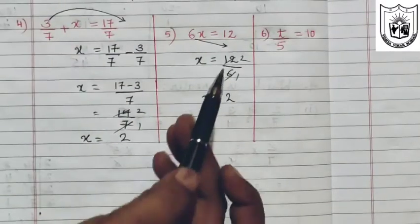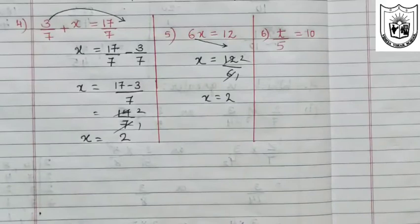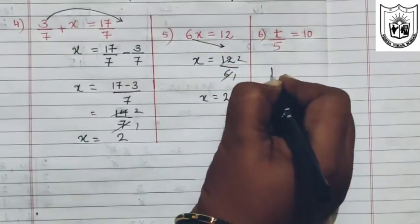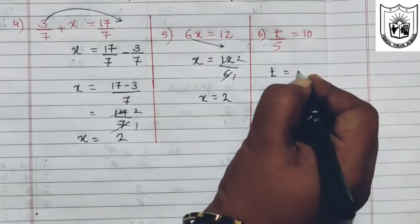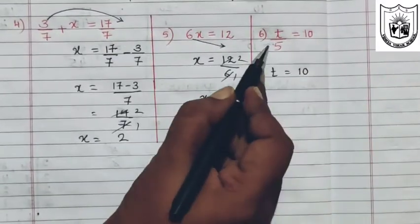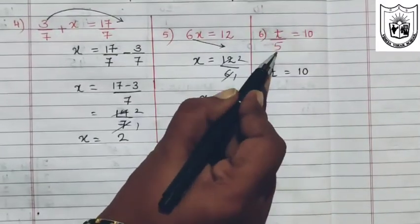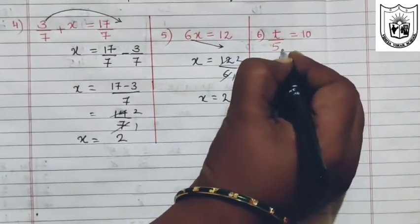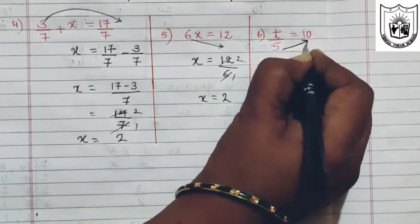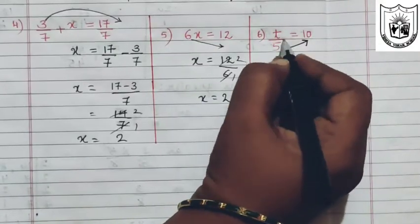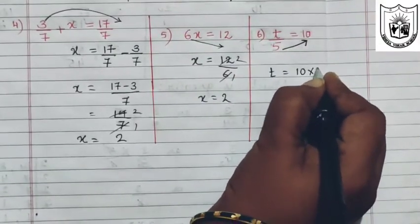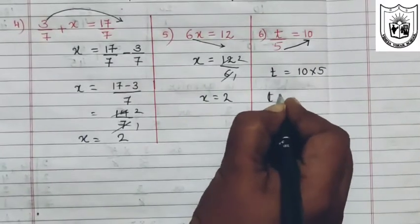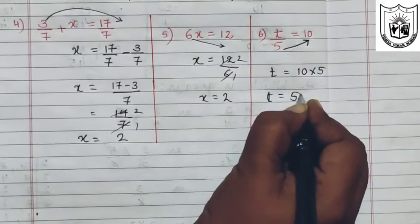In the sixth problem we have t divided by 5 equals 10. We have to find the value for t. Between the variable and the number we have division. When this number is transposed to the other side, it moves up and division becomes multiplication. So t equals 10 multiplied by 5, which is 50.